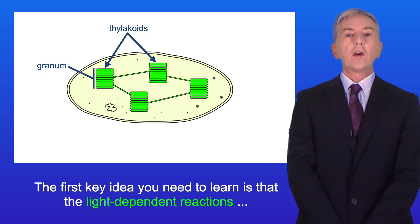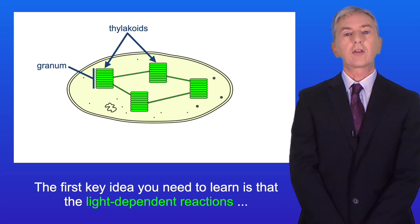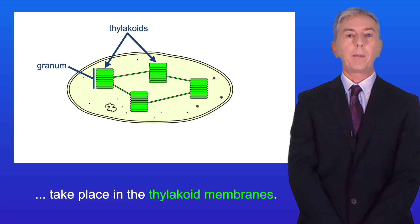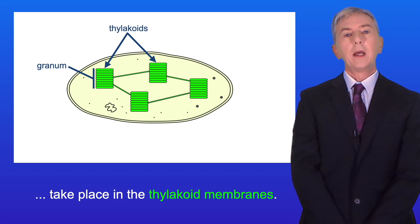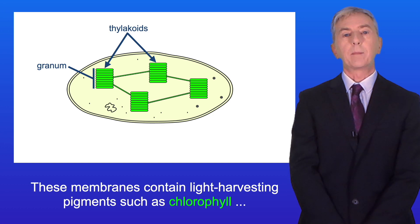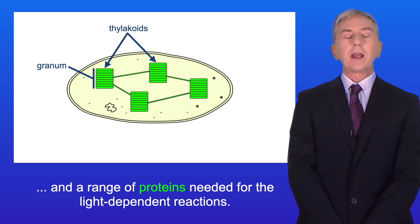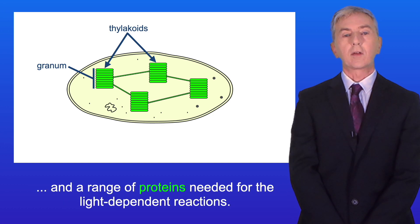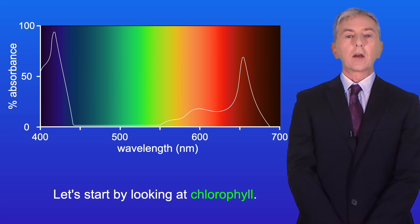In this video we're going to start looking at the light dependent reactions. The first key idea you need to learn is that the light dependent reactions take place in the thylakoid membranes. These membranes contain light harvesting pigments such as chlorophyll and a range of proteins needed for the light dependent reactions. So let's start by looking at chlorophyll.